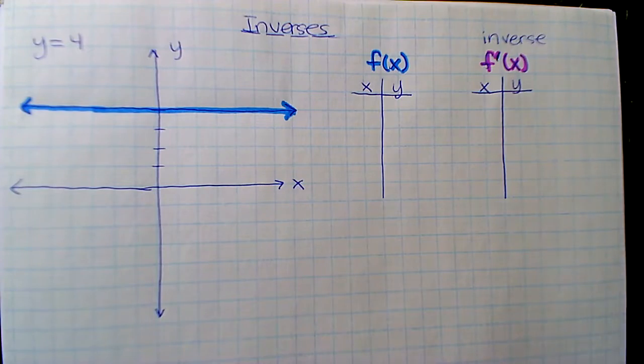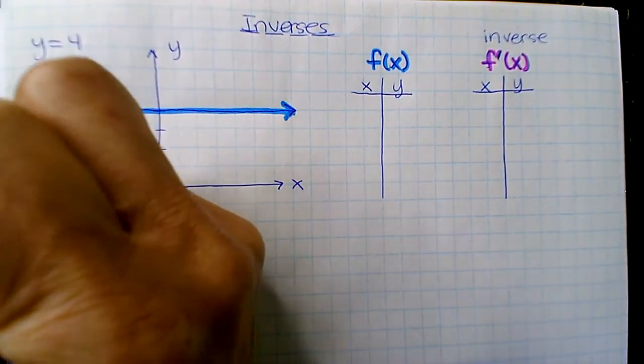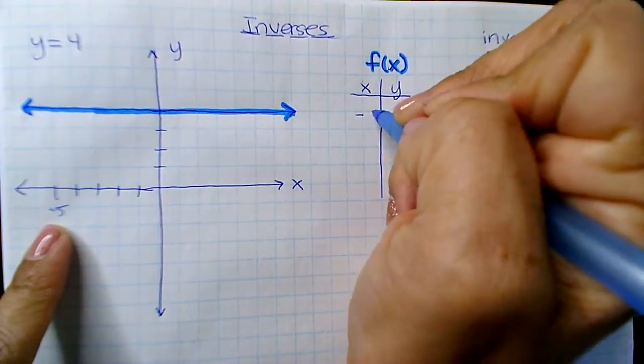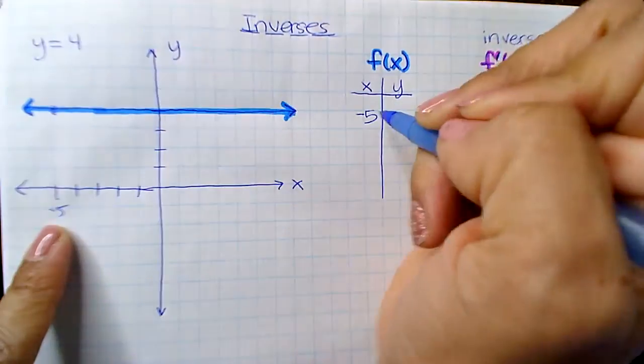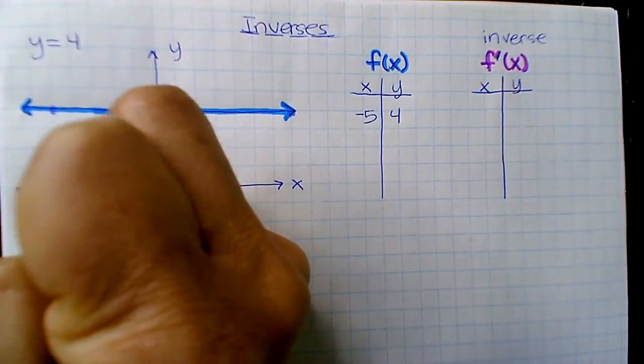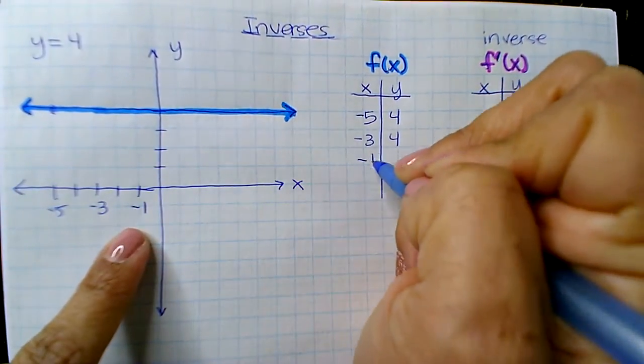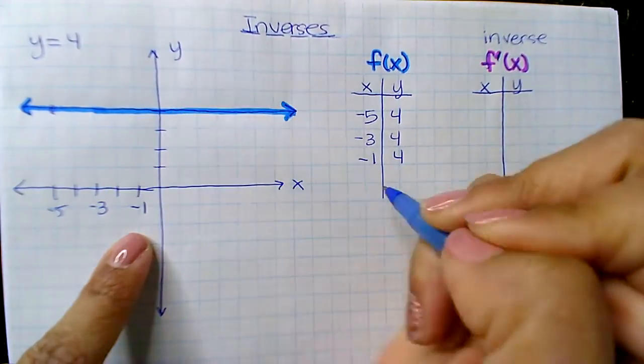This is like the trifecta. If I pull out a point, 1, 2, 3, 4, 5. So this is negative 5, negative 5, 4. If I pull negative 3, negative 3, 4. Negative 1, negative 1, 4.